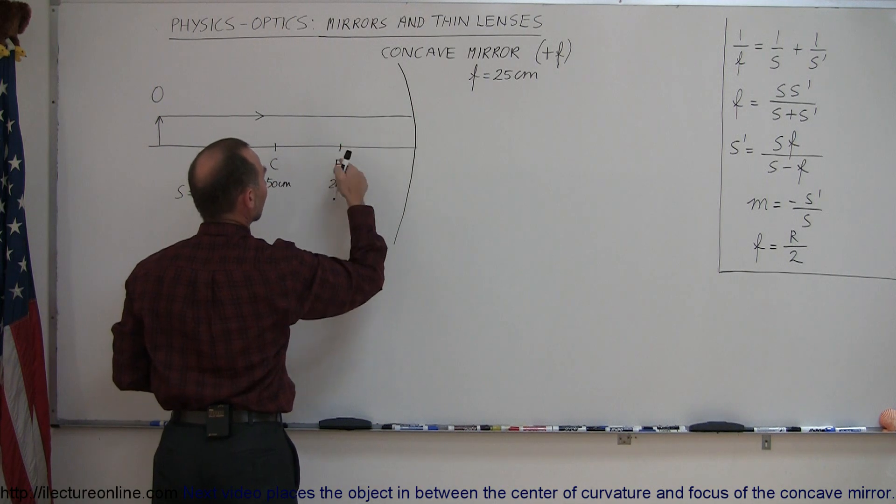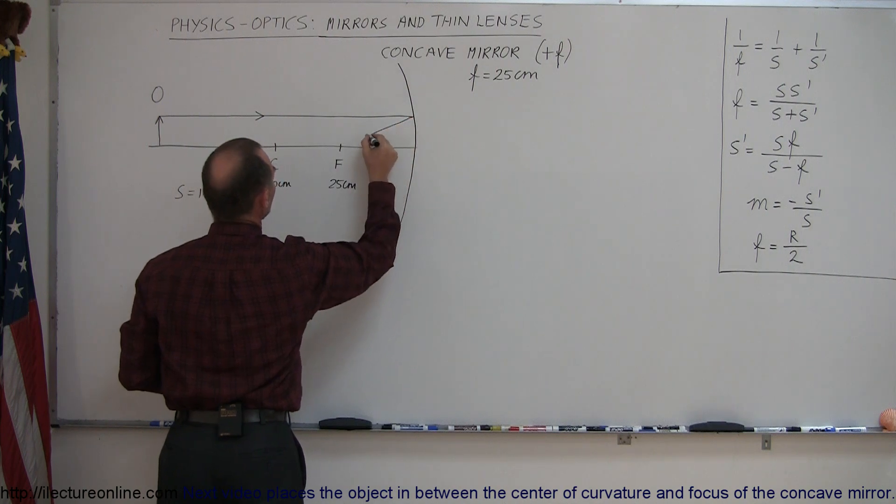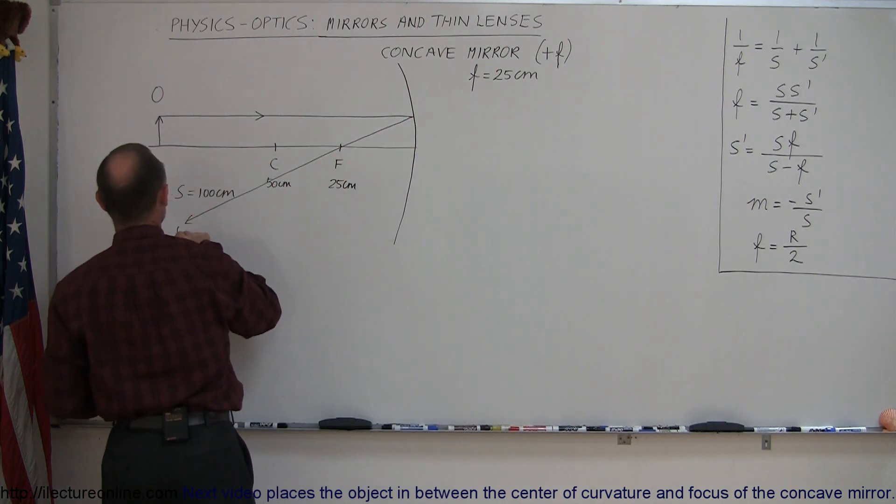When it hits the mirror, it's going to reflect off the mirror, and it's going to reflect back through the focal point. So it looks kind of like this. Okay, so that's ray number one.